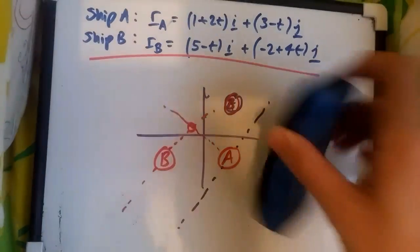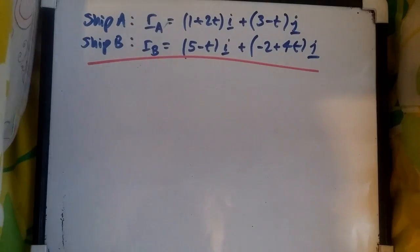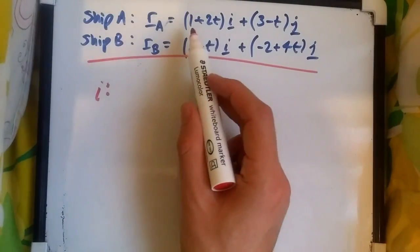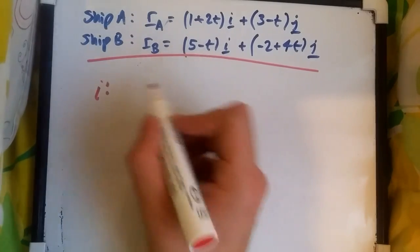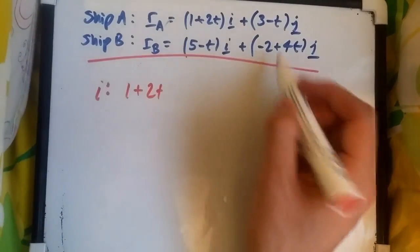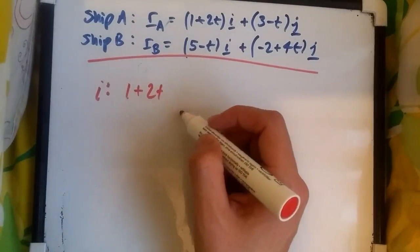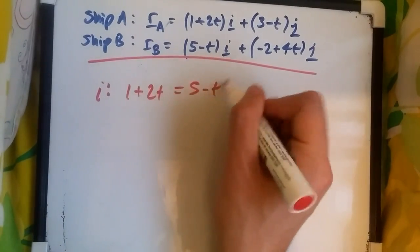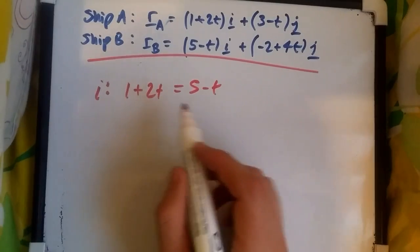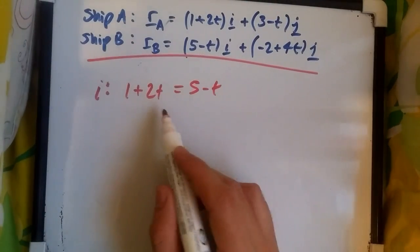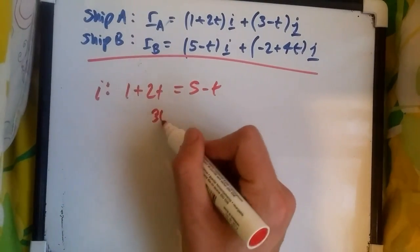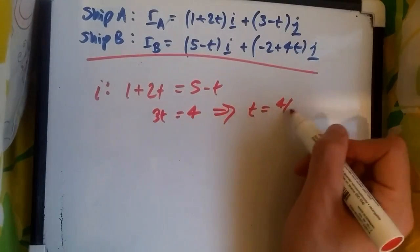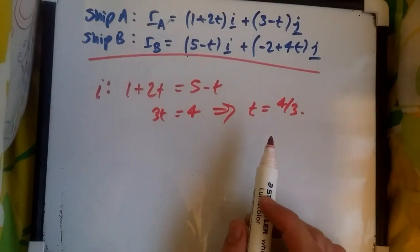The first thing you want to do is match in terms of i and j. Let's look at i's. Let's match these two equations: 1+2t against 5-t. If we get the same t for both of them, then at that time they are exactly in the same point, meaning they will collide. So let's solve the first equation: 1+2t = 5-t. Adding t and subtracting 1, we get 3t = 4, and therefore t = 4/3. That's one possible time.